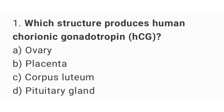Question number one: which structure produces human chorionic gonadotropin? The right answer is option B, placenta.